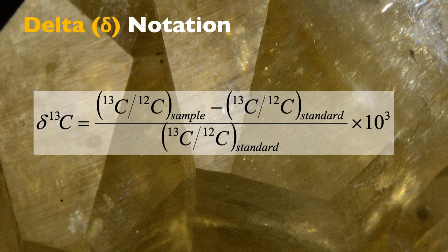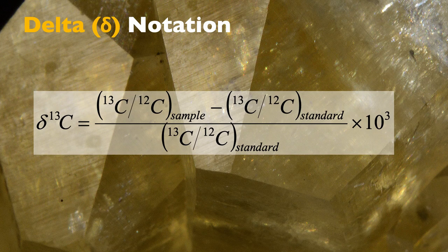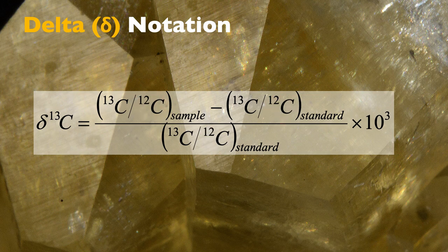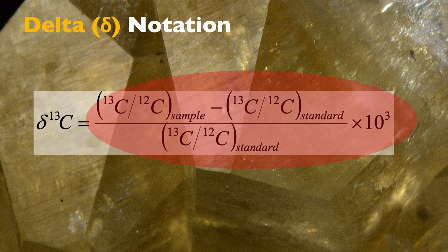For carbon isotopes we do exactly the same thing using the Delta notation. The heavy, rare isotope of carbon is C13; the light, more common isotope — about 98–99% of carbon — is C12. The formula is exactly the same: (C13/C12 of sample − C13/C12 of standard) / (C13/C12 of standard) × 1,000. One thing not yet mentioned is what standards we use to report our isotope values.